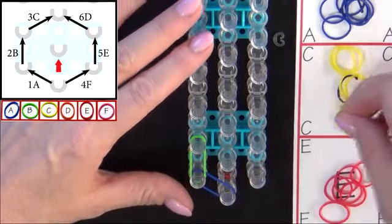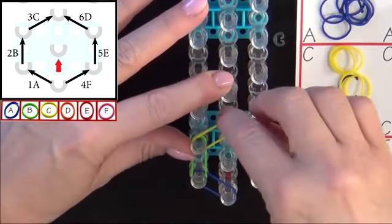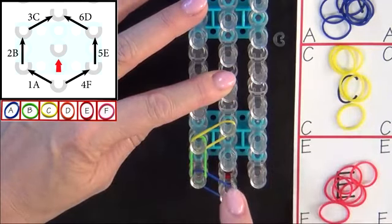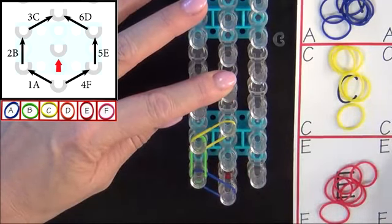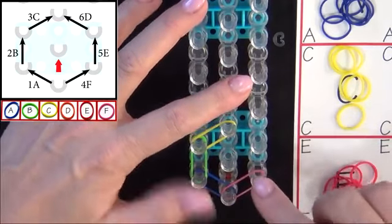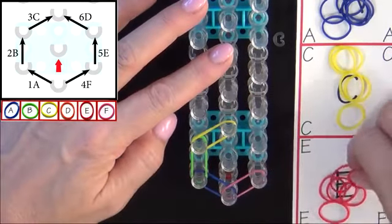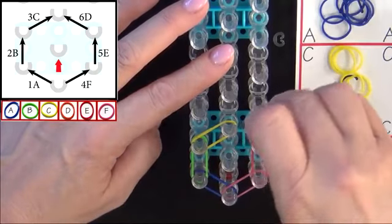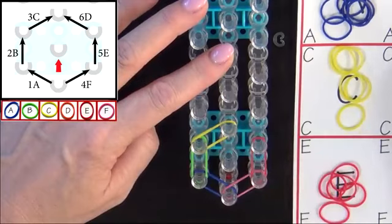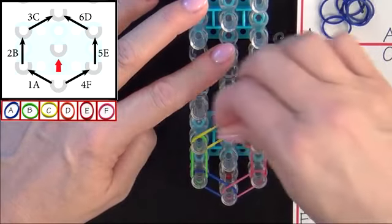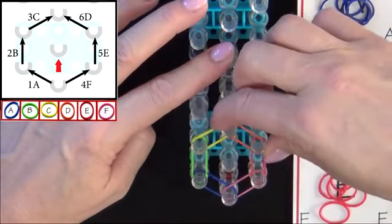And 3C will turn into the center. Then you go back to the first pin and you'll place 4F, 5E, and 6D. Then push those down.